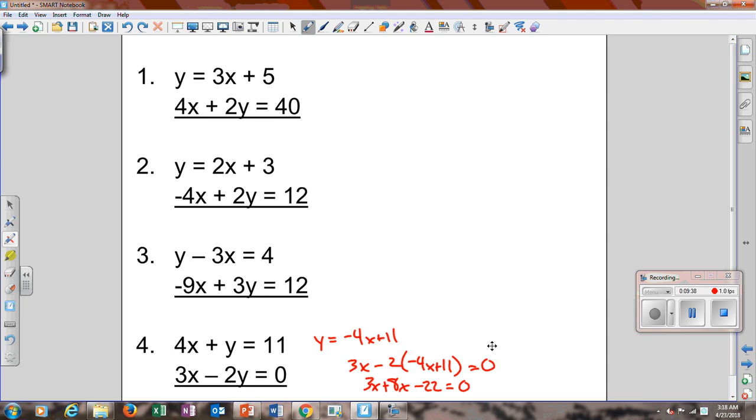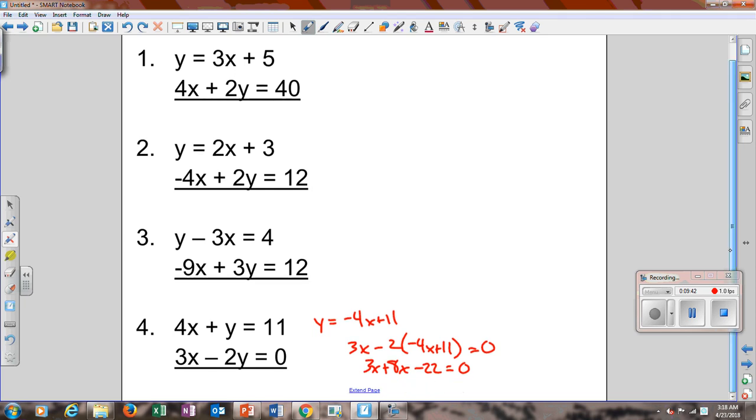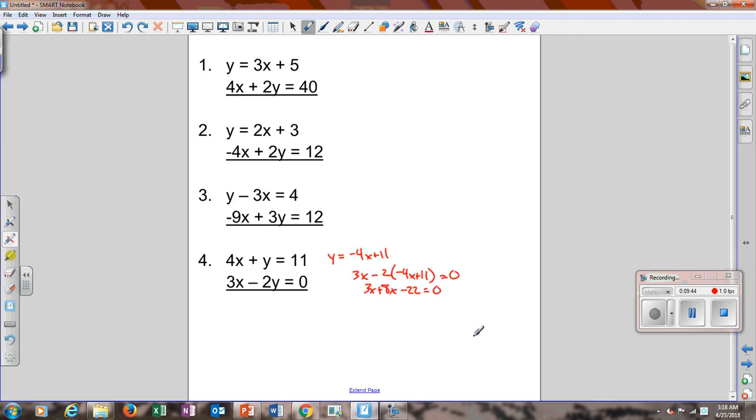Add the 22 to the other side. Combine your like terms. It's going to give you 11x equals 22. Divide by 11, x equals 2.